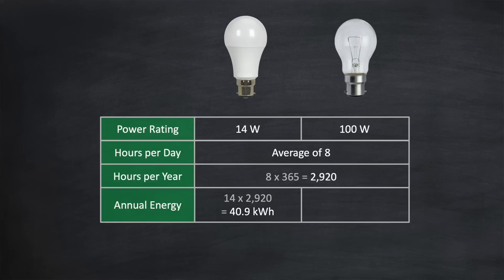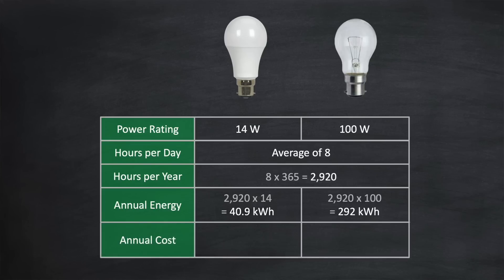For the incandescent bulb, 100 watts times 2,920 is a whopping 292 kilowatt hours. We can then work out the cost: 40.9 kilowatt hours times 40p equals £16.36 for the LED bulb, and 292 kilowatt hours times 40p equals £116.80 for the incandescent bulb. Crikey — that's for just one bulb! It's worth checking around your house to make sure you've replaced all of your incandescent bulbs with LED ones.